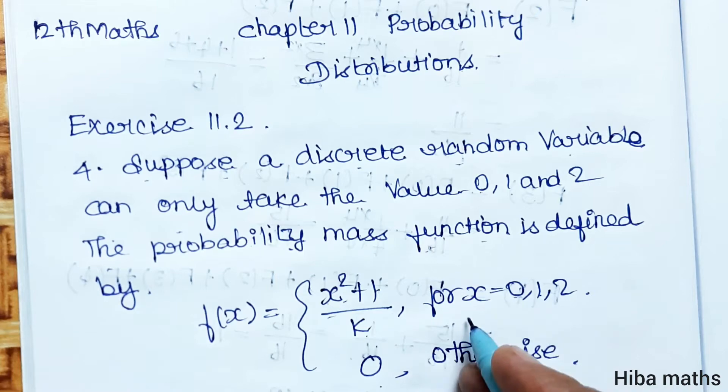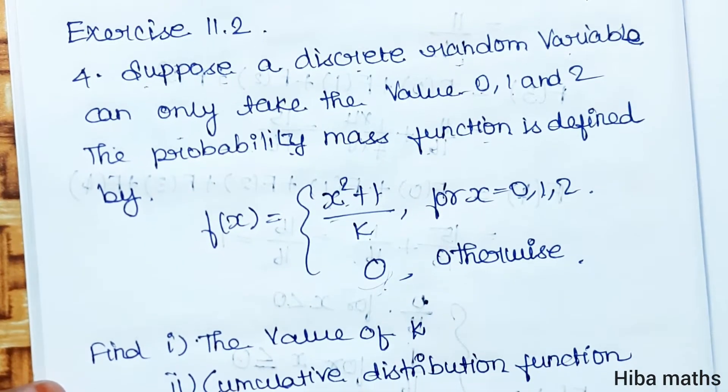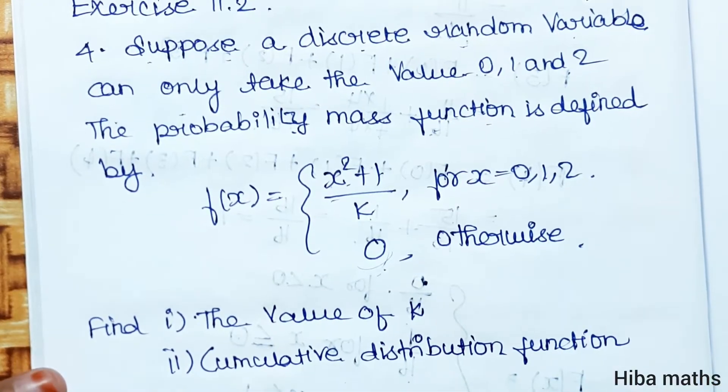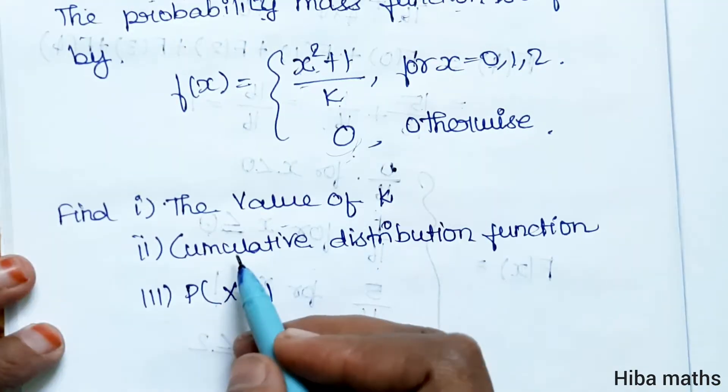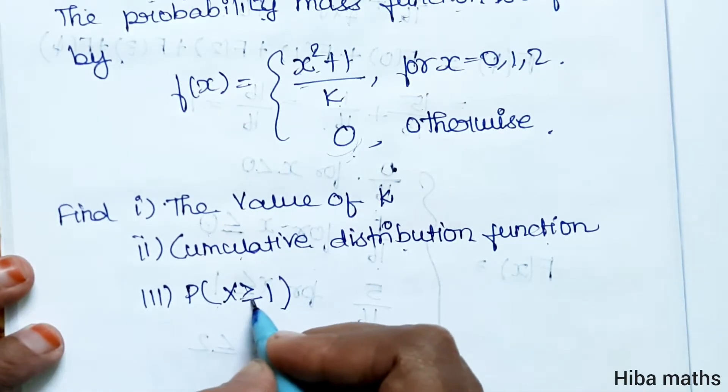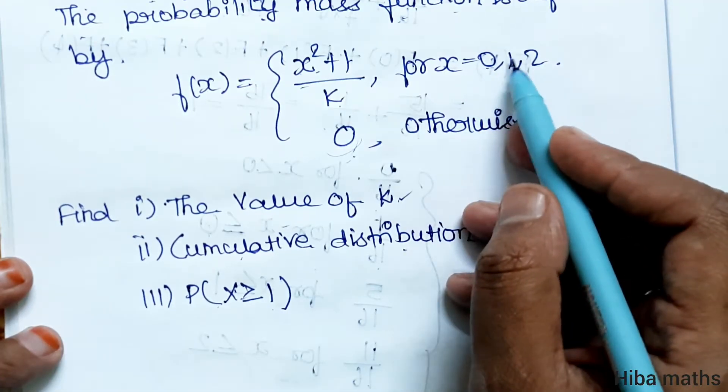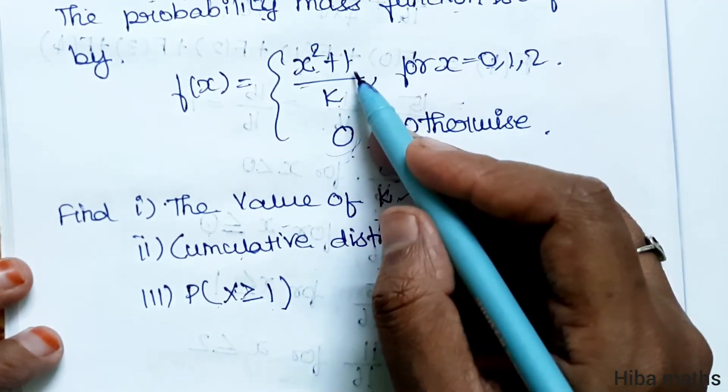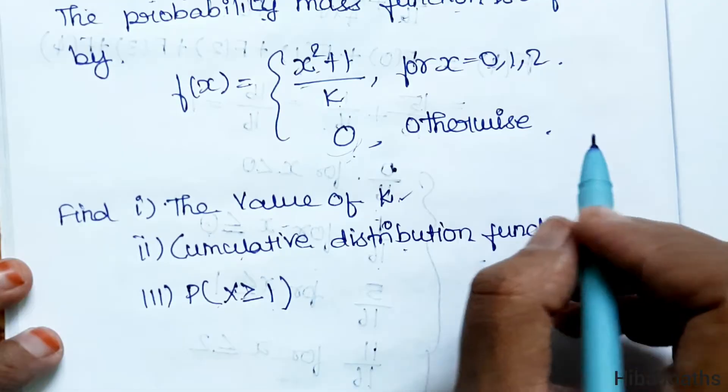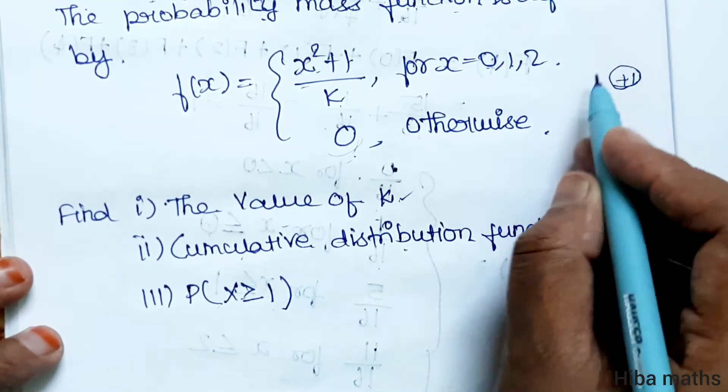Find the value of k. To find the value of k, we use the property that the probability mass function sum is equal to 1.